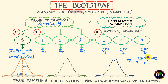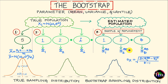Once you have the point estimate, standard error, and sampling distribution, you are in a position to construct a confidence interval for your chosen population parameter and also perform hypothesis testing. This was all about the bootstrap technique. How does it fare compared to the other two approaches?